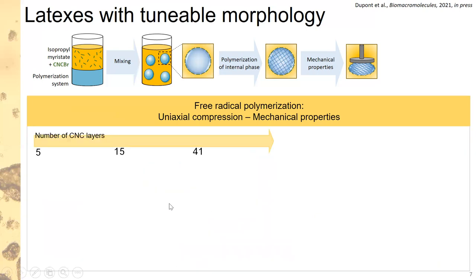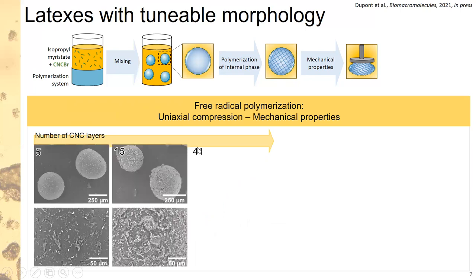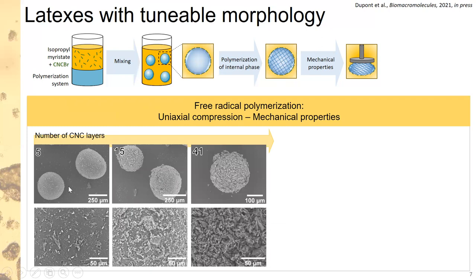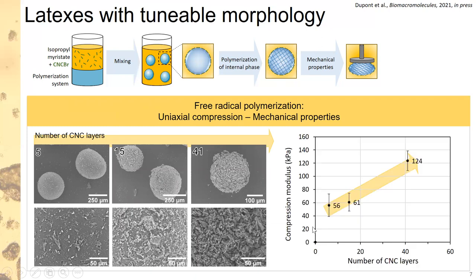We were also able to vary the number of CNC layers around each droplet from 5 to 40. As seen by SEM, the more layers applied, the denser the surface coverage becomes. By measuring the compressive modulus, we found that increasing the number of CNC layers also increases the mechanical properties of these latex beads.